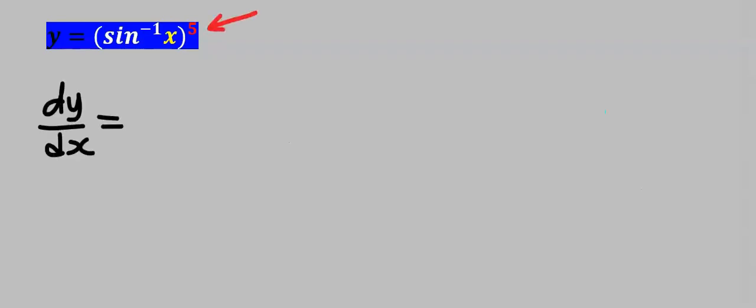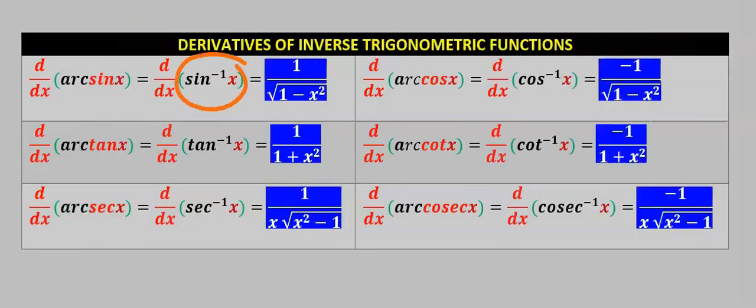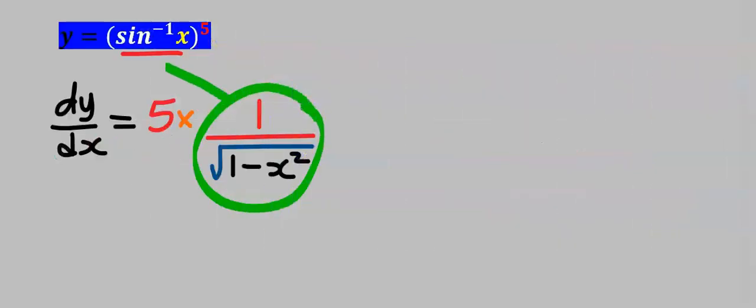To find dy/dx of this function, the 5 at the top will come down. Next we're going to differentiate sine inverse of x. When you differentiate sine inverse of x you get 1 divided by the square root of 1 minus x squared.